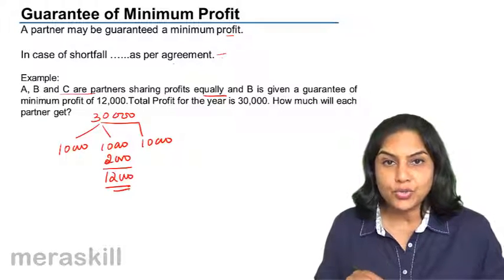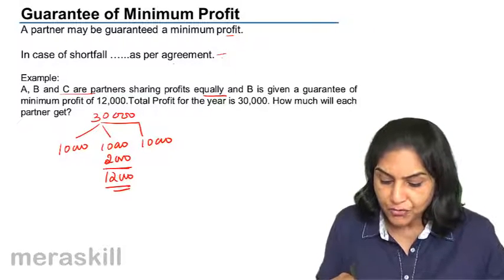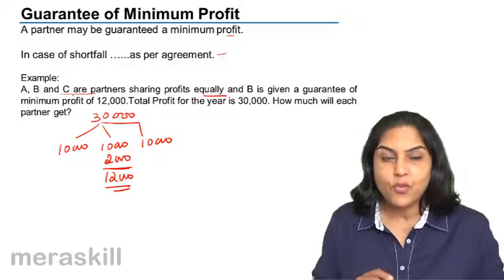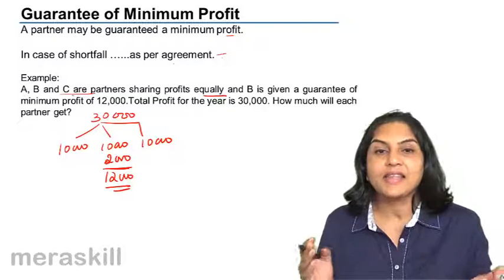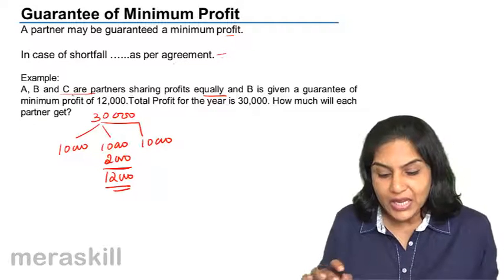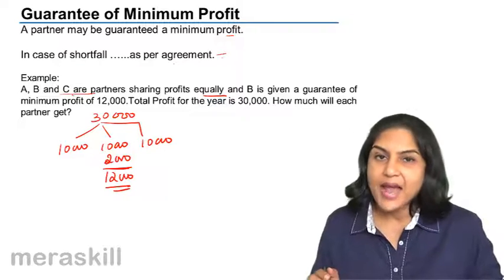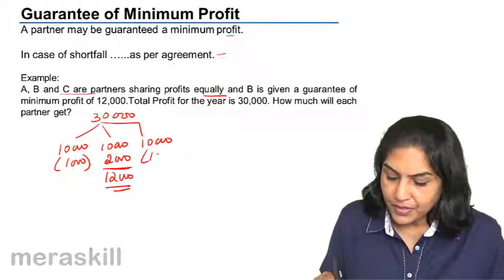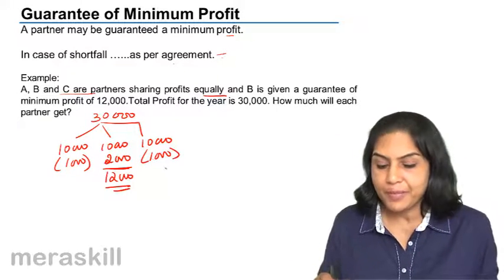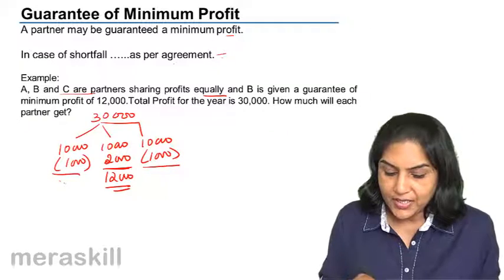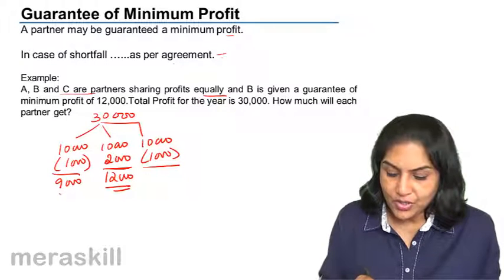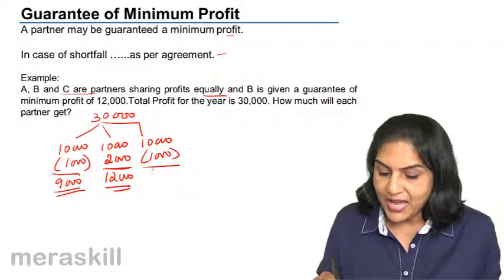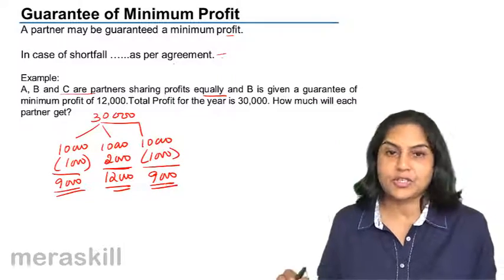This shortfall of 2,000 will be borne by the remaining partners A and C. What is the ratio between A and C? They are equal, so the 2,000 is borne equally — A bears 1,000 and C bears 1,000. Therefore, A will get 9,000, B will get 12,000, and C will also get 9,000.